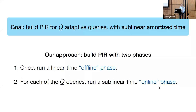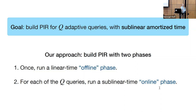Our goal in this work is to build PIR schemes that support many adaptive queries with sublinear amortized time. Throughout this talk, I'm going to use Q to denote a bound on the number of adaptive queries that our client wants to make. Our approach is to build PIR schemes that work in two phases. First, our client and server run a one-time offline phase requiring linear server work. After this, for each of the Q adaptive queries that our client wants to make, it runs a sublinear time online phase with the server. Amortized over many queries, if Q is at least n^ε for some constant ε, this gives us a PIR scheme with sublinear amortized time.